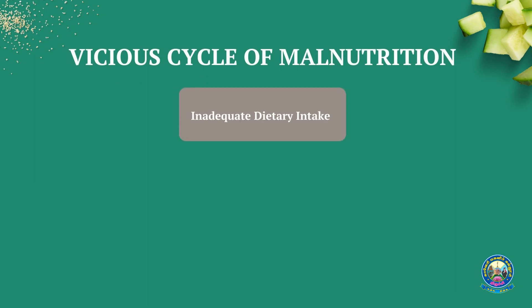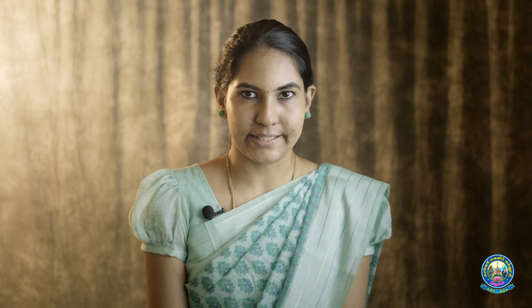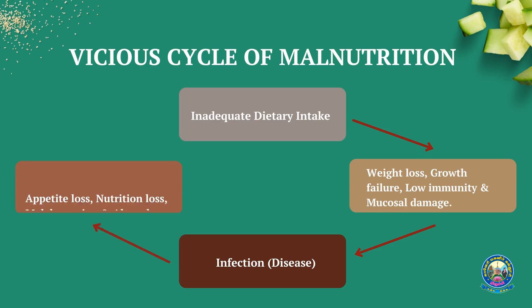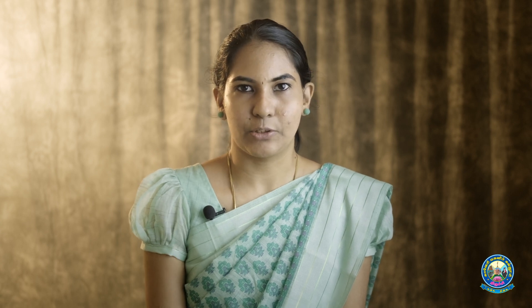Now let us see about the vicious cycle of malnutrition. The first and foremost cause is inadequate dietary intake — including both macro and micronutrients — which leads to weight loss, growth failure, low immunity and mucosal damage. These further lead to infections such as diarrhea, which cause loss of appetite, nutrition loss, and malabsorption. All of these result in altered metabolism, which in turn leads back to inadequate dietary intake — completing the vicious cycle.